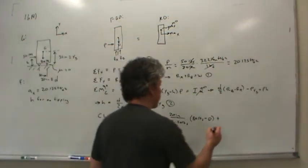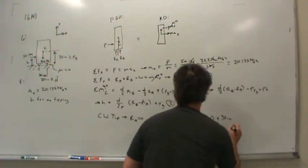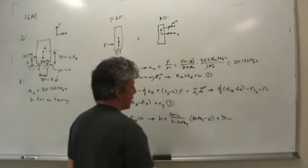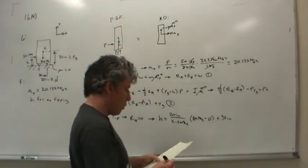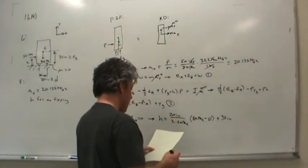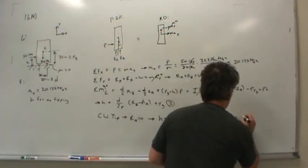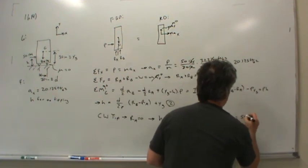plus yg. And yg is of course 35 inches. Notice that the pounds force cancel and we're left with h in inches, as we would expect. And so h is equal to 51 inches.